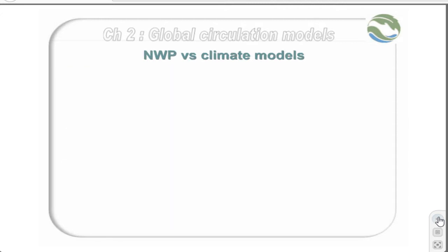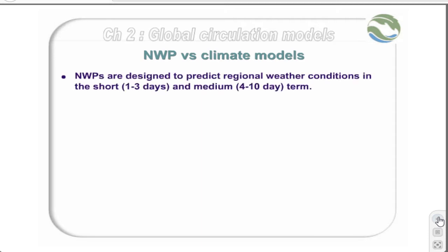There are considerable differences between National Weather Prediction and Climate Modeling. National Weather Prediction models are designed to predict regional weather conditions in the short-term and the medium-term — that's one to three days, and four to ten days.